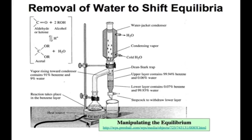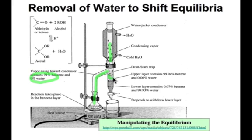The aldehyde or ketone together with the alcohol are placed at the bottom, along with a solvent like benzene. Benzene is especially useful because its vapor, which travels up the arm, is rich in water. But while the vapor phase is rich in water, the liquid phase that condenses in the reflux condenser is an immiscible pair of liquids — a benzene-rich layer on top that returns to the pot as it overflows, and a heavier water-rich phase that the chemist can drain from the stopcock at the bottom to remove water from the reaction medium.